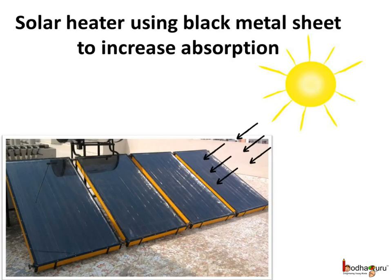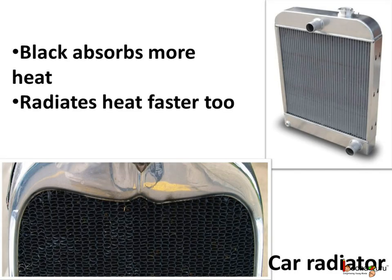Solar heaters, which are used to heat water, need to absorb more heat from the sun. And hence, black metal sheets are used in them to increase heat absorption. Black color absorbs more and also radiates out more. This is the reason why the radiator in a car engine is black. The radiator absorbs heat from the engine to keep it cool and radiates the heat outside very fast. If we stand near the radiator after the car comes back from a trip, we can feel the heat radiating out from it.